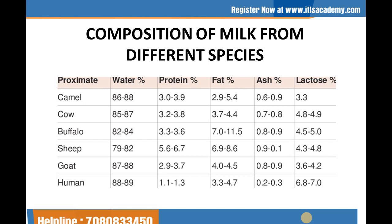Cow's milk generally consists of 85 to 87% water, 3.2 to 3.8% protein, 3.7 to 4.4% fat, 0.7 to 0.8% ash, and 4.8 to 4.9% lactose. In buffalo's milk, it generally consists of 82 to 84% water, 3.3 to 3.6% protein, 7.0 to 11.5% fat, 0.8 to 0.9% ash, and 4.5 to 5.0% lactose.